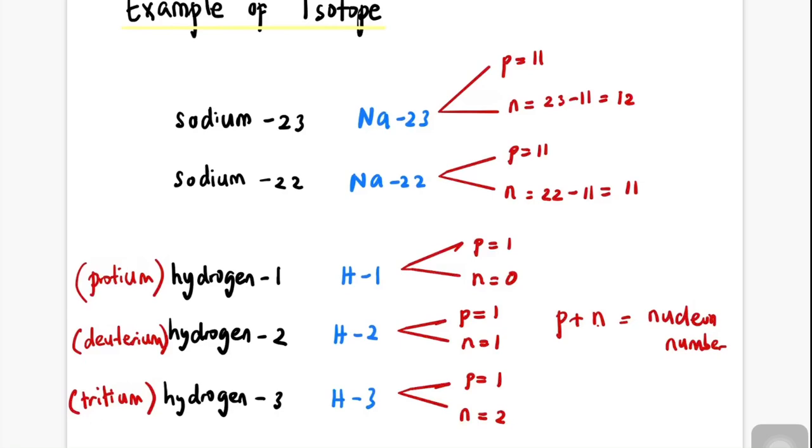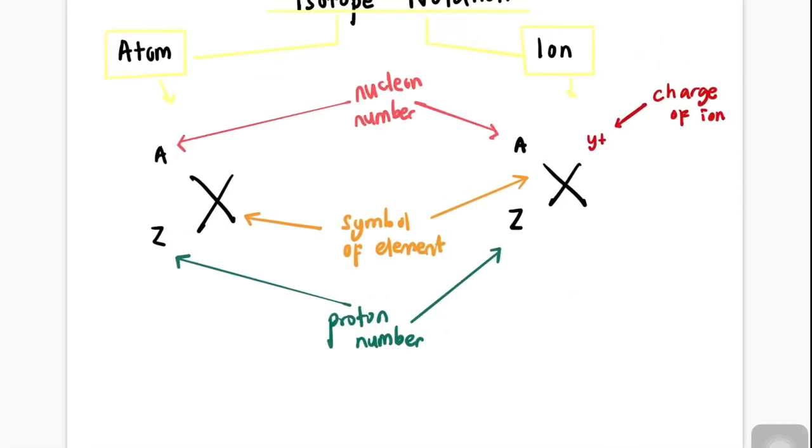Now let's learn isotope notation. Isotope notation can be written in the form of ions or atoms. Both have X as the symbol of element, A is the nucleon number, and Z is the proton number. For ions, there must be a charge on the top right depending on the charge value.